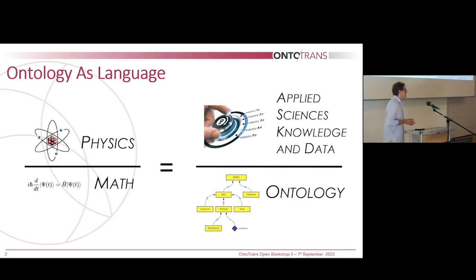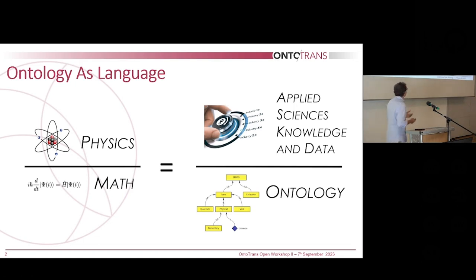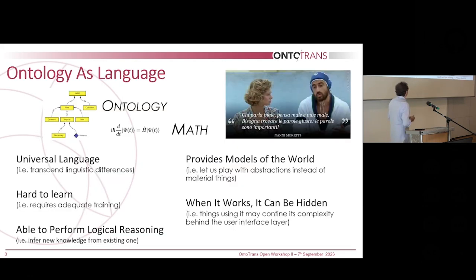Why ontologies? Ontologies are a way to represent, to speak about things in a very powerful way. Just like math is doing for physics, what we want to do is to use another powerful language, a computable language, to speak about applied science, knowledge, and data.